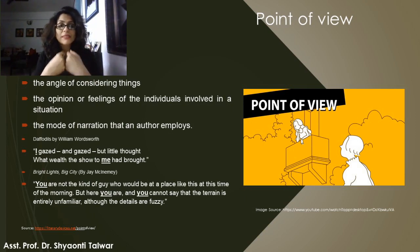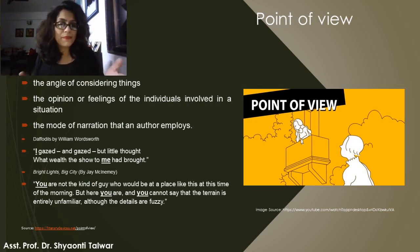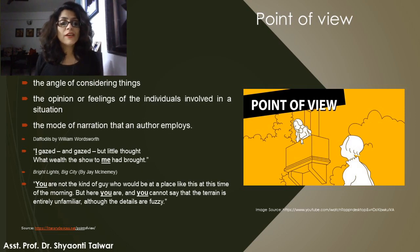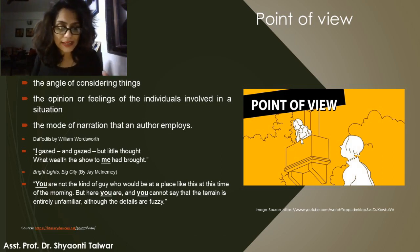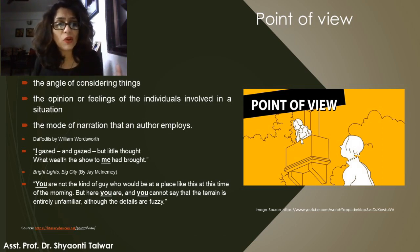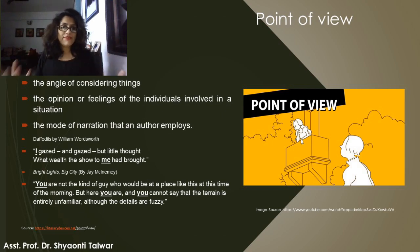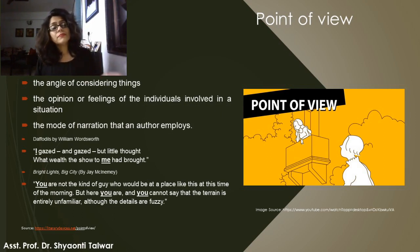Points of view can include the subjective point of view, where the author uses 'I' to insert the subject into the narrative. For example, in the poem 'Daffodils' by William Wordsworth, which I'm sure you have studied, the poet inserts his subjectivity — there's an overlap between the poet and the narrator. He says: 'I gazed and gazed but little thought what wealth the show to me had brought.' Here the narrator is talking about his experiences directly, sharing his point of view about how much joy the daffodils had brought to him.